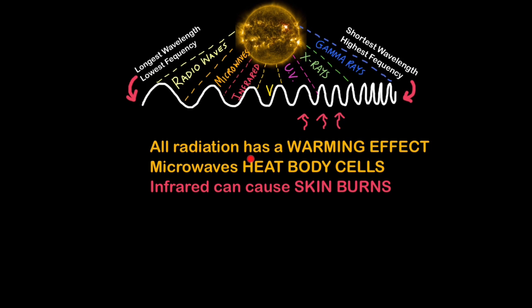All radiation, as it gets absorbed by objects, has a warming effect. For example, there's two specifics you need to know, is microwaves heat body cells. Specifically, microwaves heat up fats and carbohydrates and water. This is why, when a microwave is on, it's best not to stand near it. Infrared radiation has a higher frequency, and it can cause skin burn, so the more infrared you absorb, it can cause your skin to burn. But these are just two examples. All radiation will have a warming effect on the object that absorbs that type of radiation.